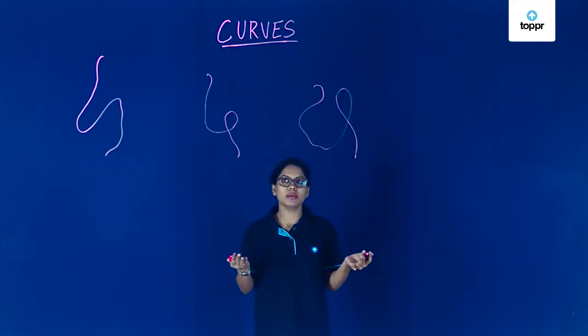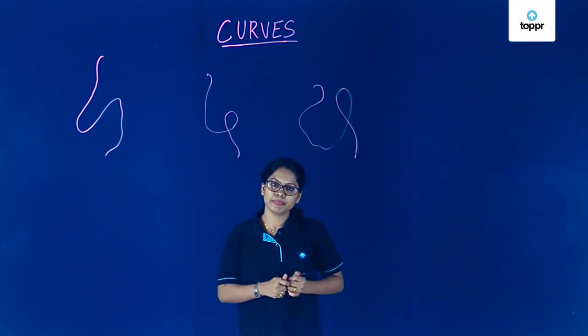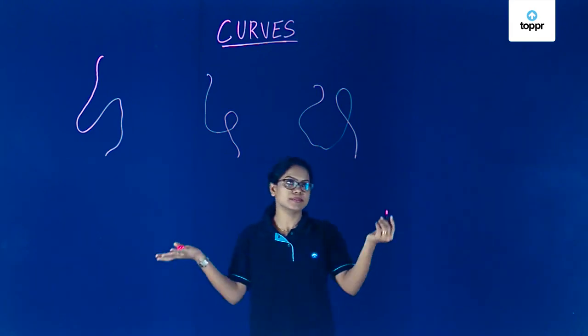So these are simply something that is not straight. So what can I call them? These can be called as curves, as simple as that.